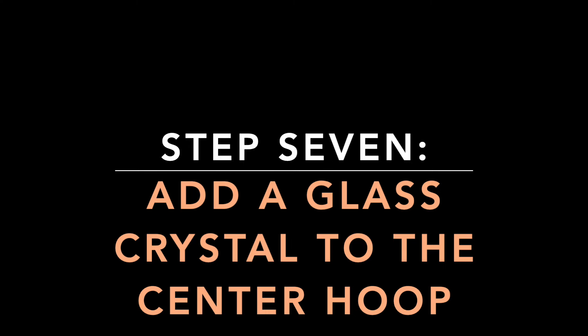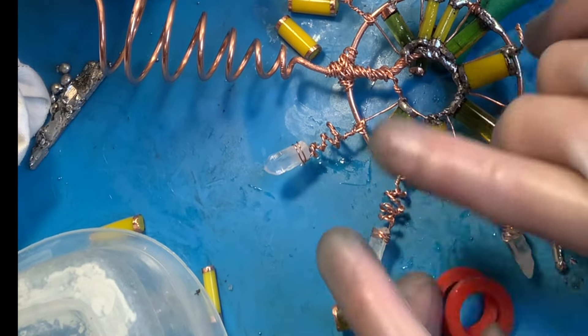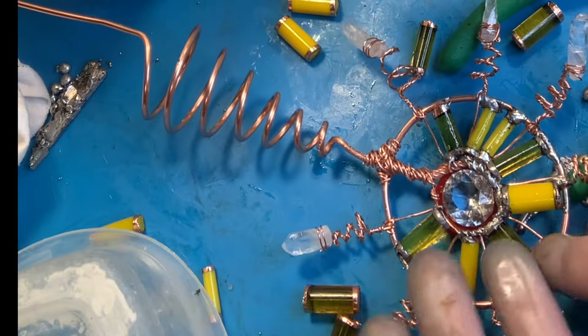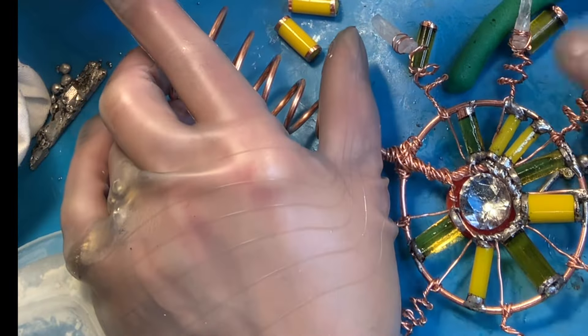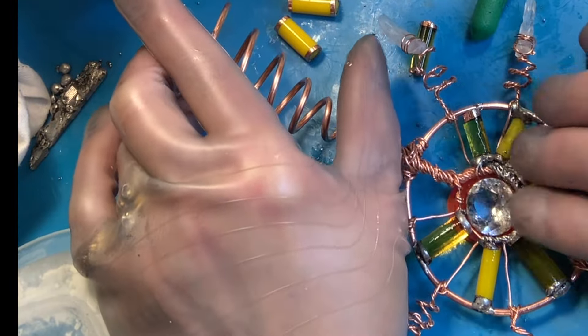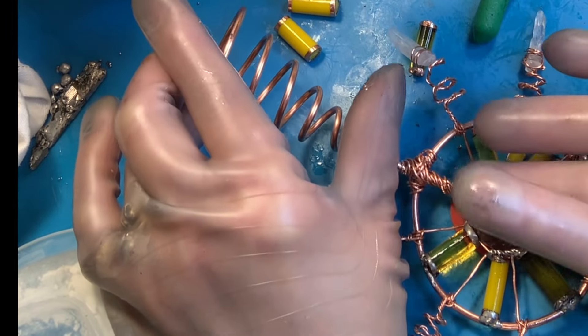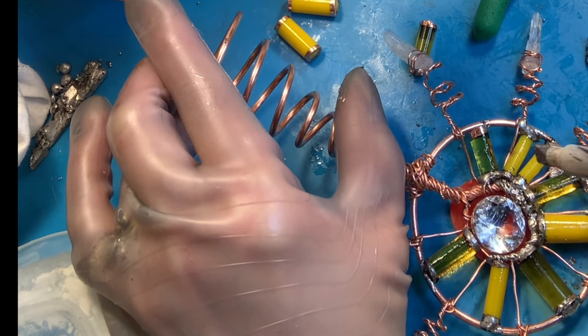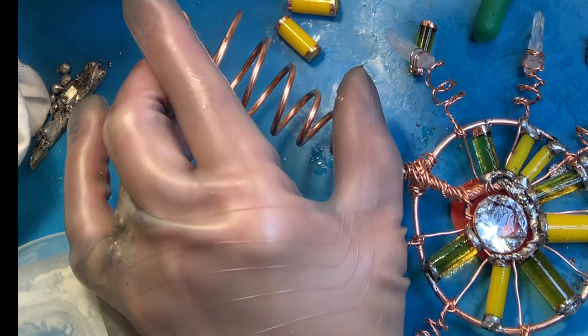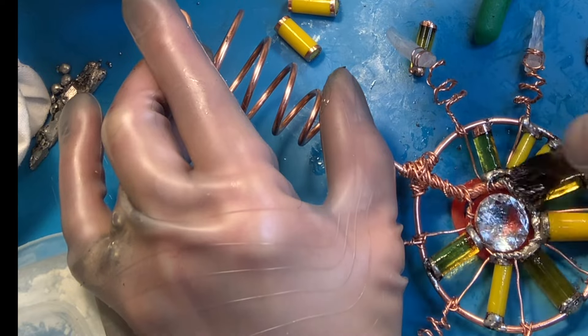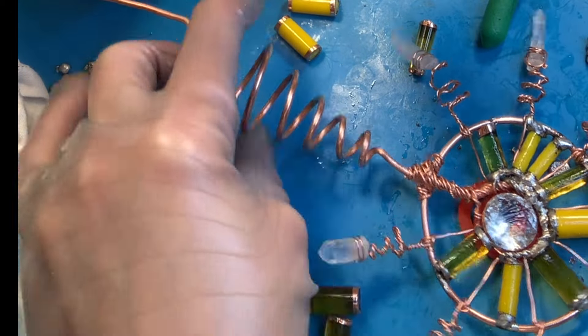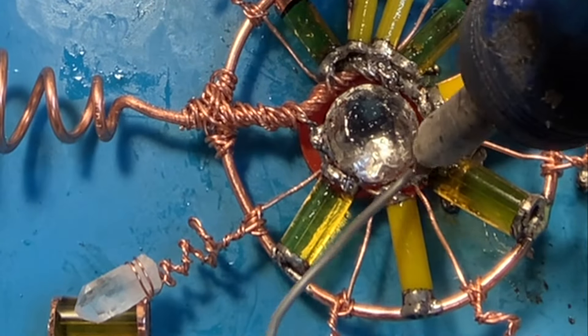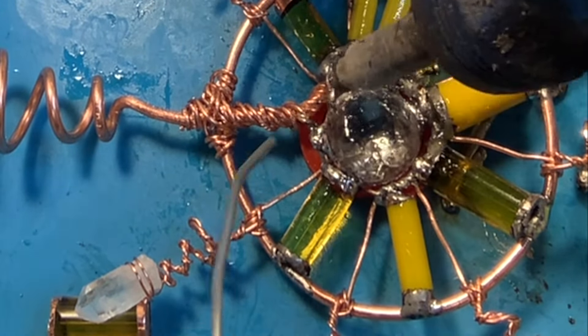Step seven: add glass crystal to the center hoop. So the center of my electroculture gardening coil here, I wanted to have a crystal, and so this is a glass crystal. It's not foiled on the back, so it's completely transparent, you can see right through it. The sun will shine right through it. I have a whole bunch of different ones and I found one that fit nicely.